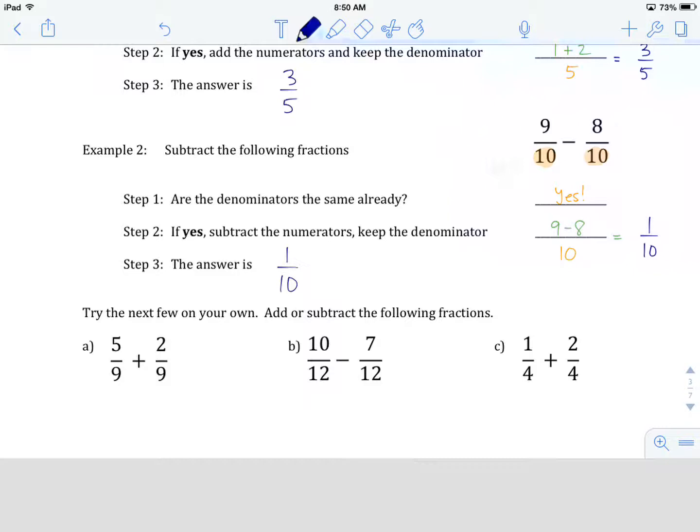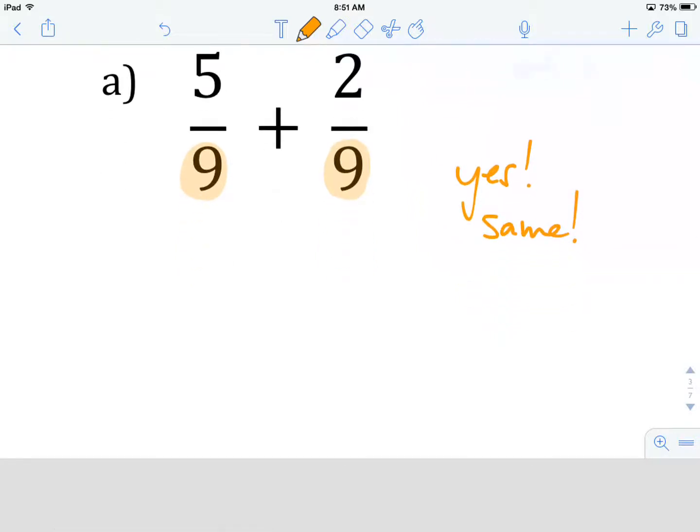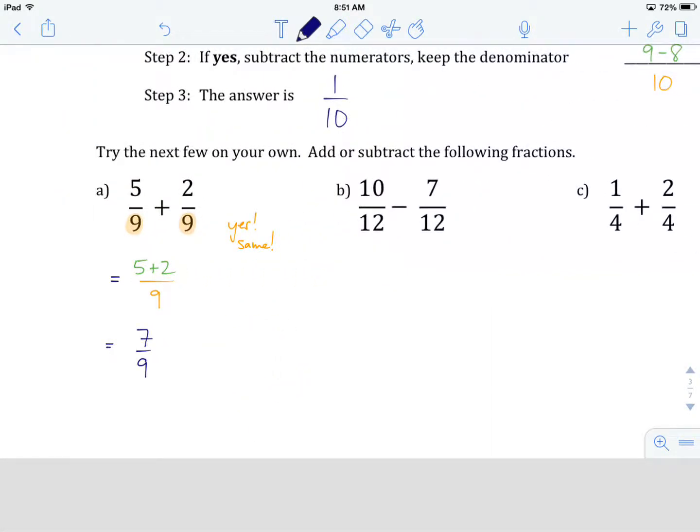I'll do one more with you here. We'll have a look at example A, then we'll get you guys to try B and C on your own. Example A, 5 over 9 plus 2 over 9. First question I want to ask myself, are my denominators the same? I look at my denominators, I have a 9 and a 9, yes, those are the same. Which means that I can just keep the denominator, there's my denominator, and I'm going to add my numerators. There's 5 and 2, that gives me 5 plus 2 over 9, that's going to give me 7 over 9. That is example A, 5 ninths plus 2 ninths is going to give me 7 ninths.